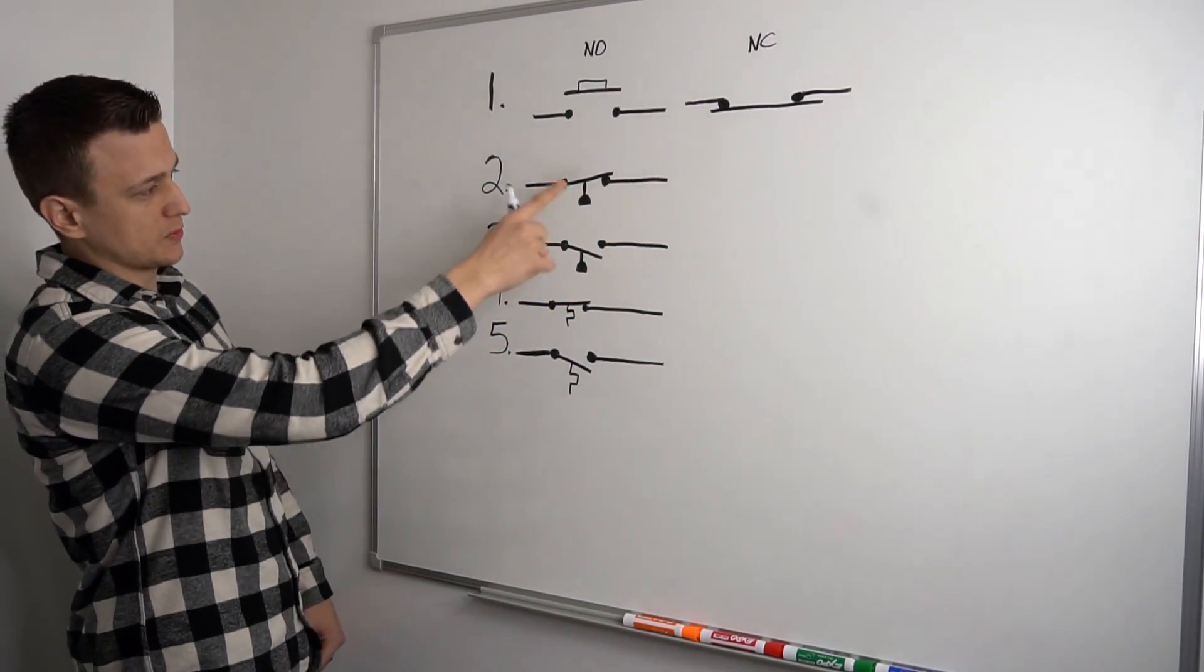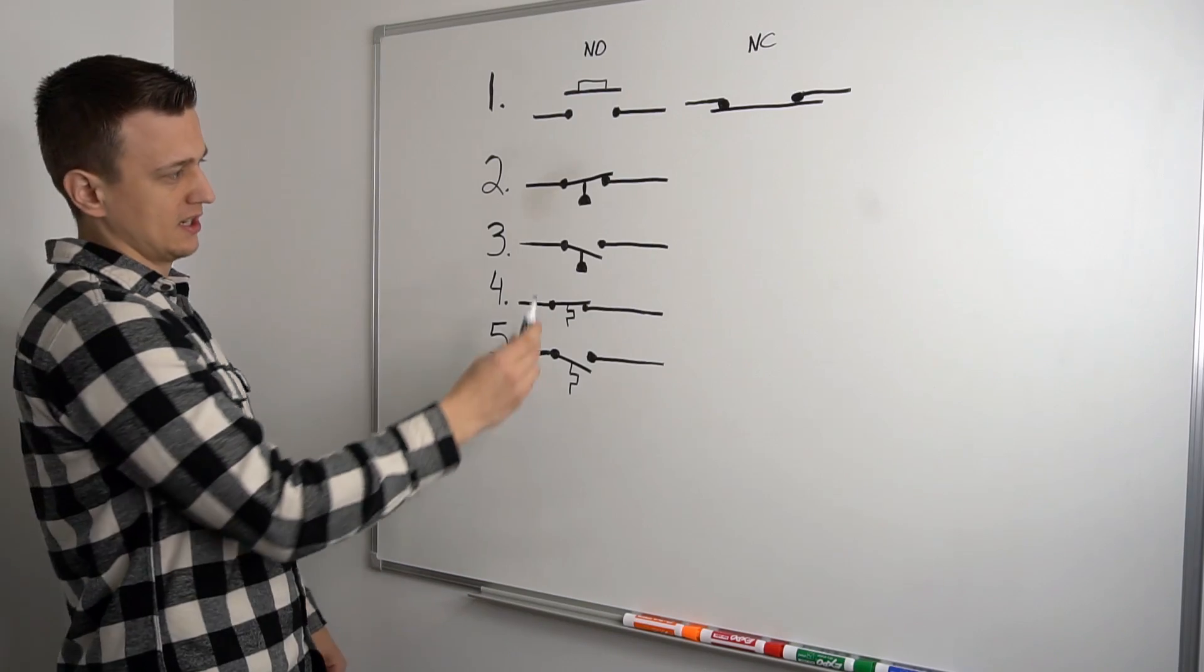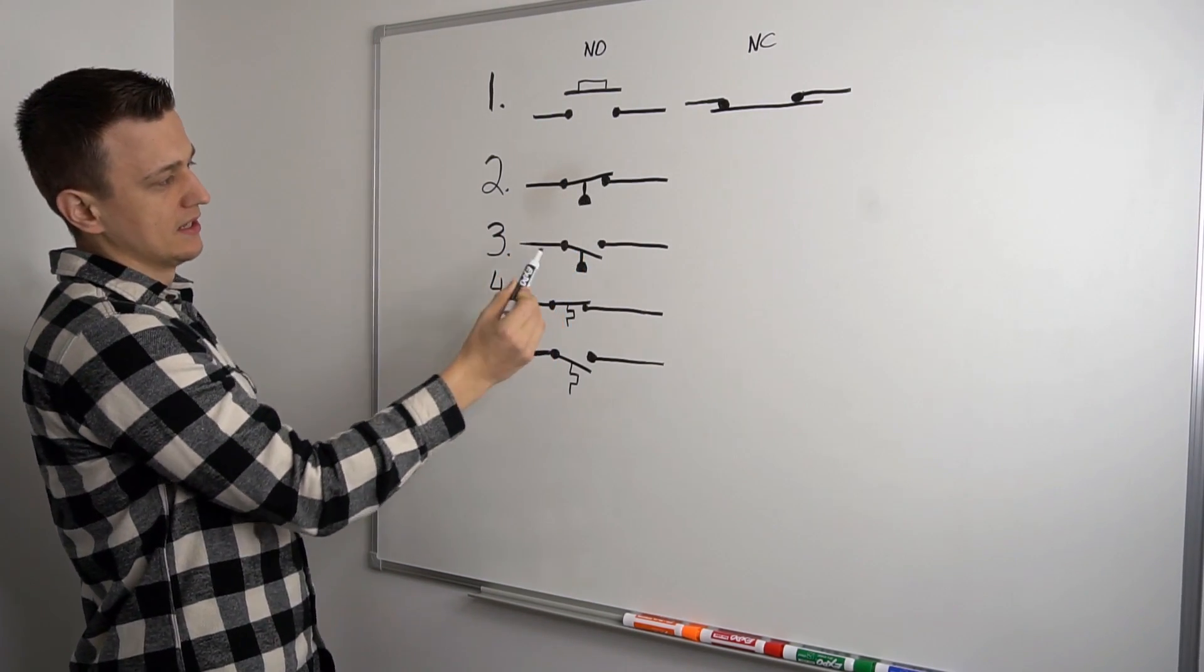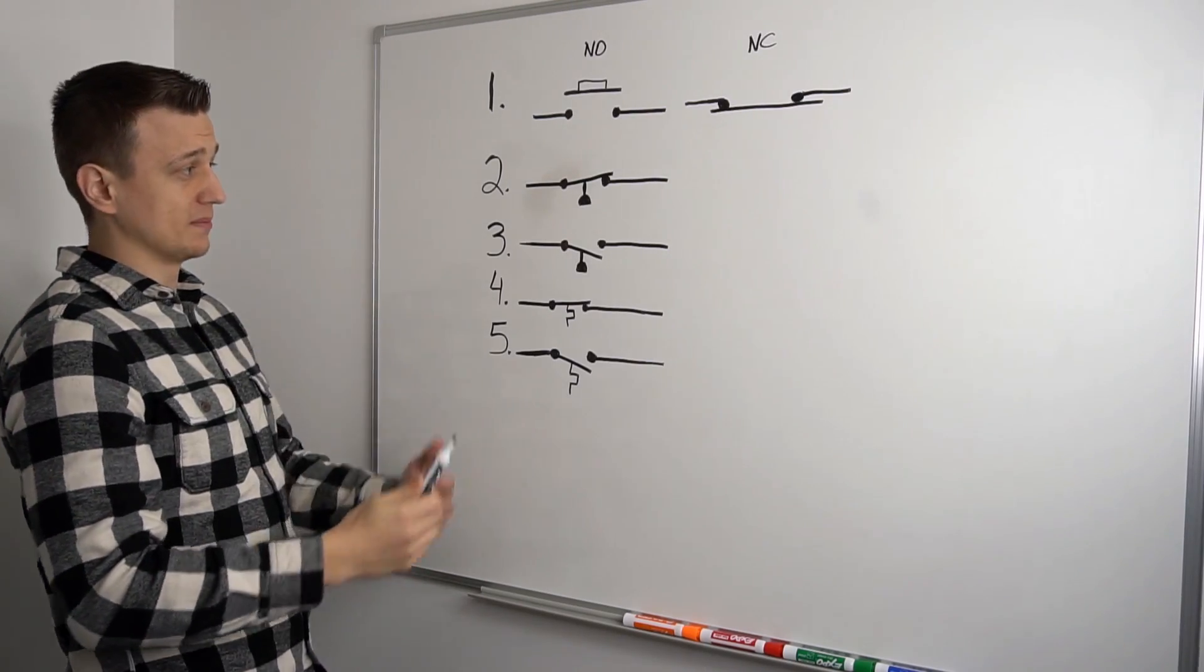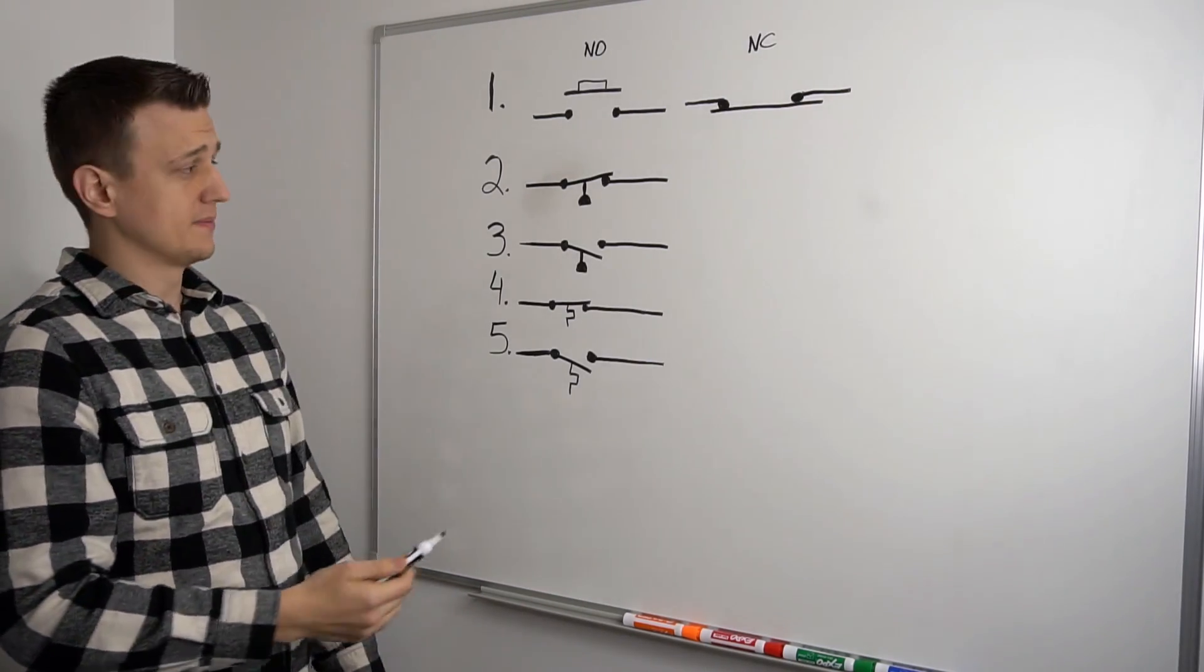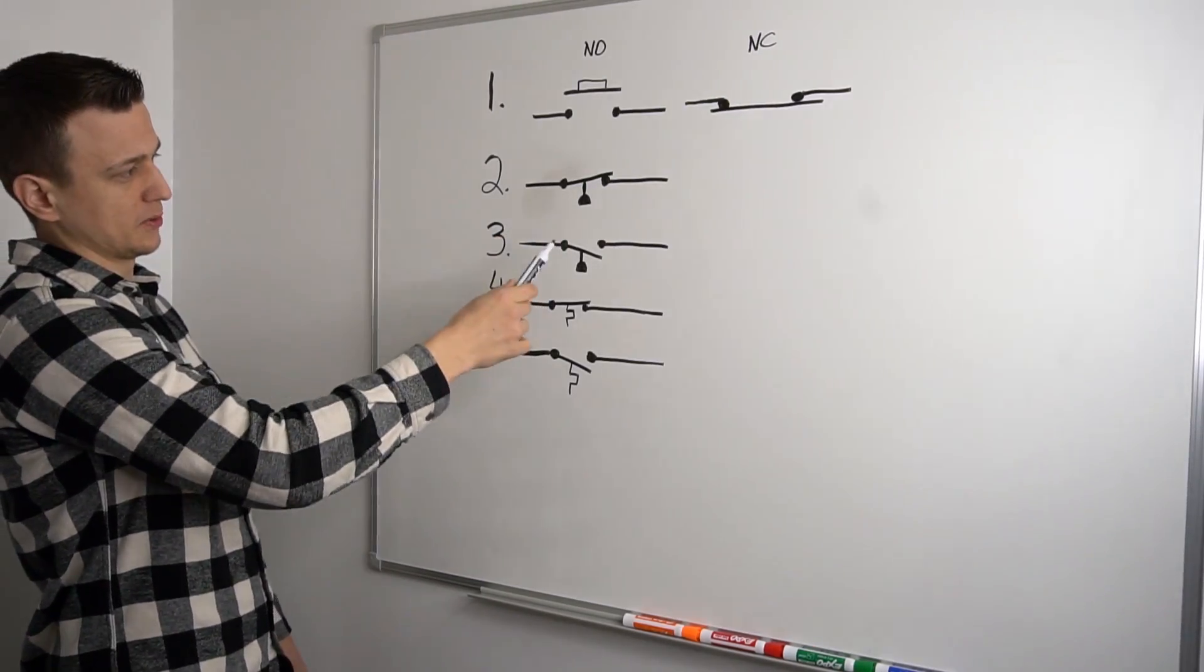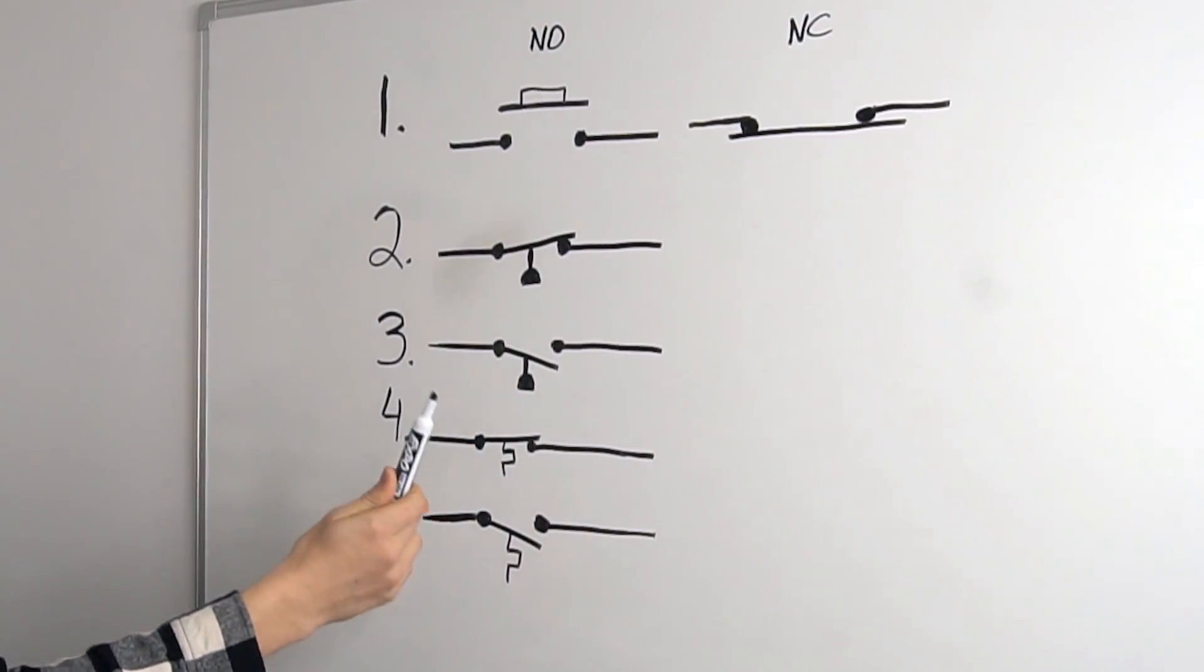The next two switches we have here are pressure switches. So whenever you see a switch with a little plunger looking thing on the bottom of it, that is a pressure switch. And those can be used in air conditioners or furnaces or washers or other appliances.